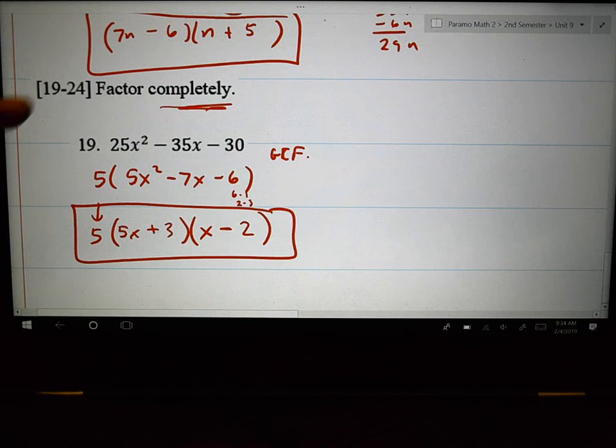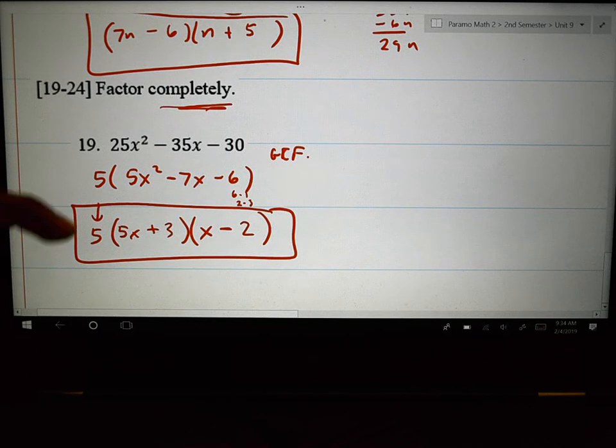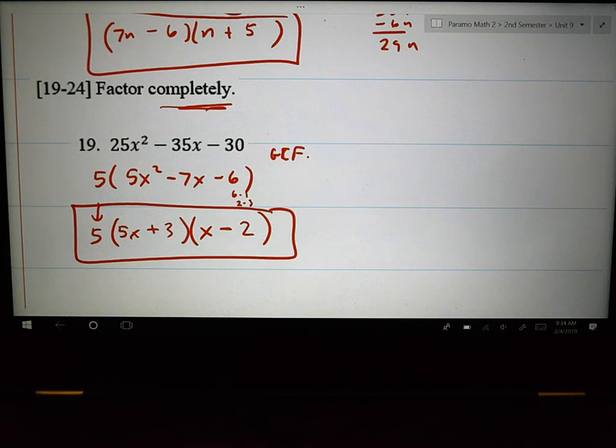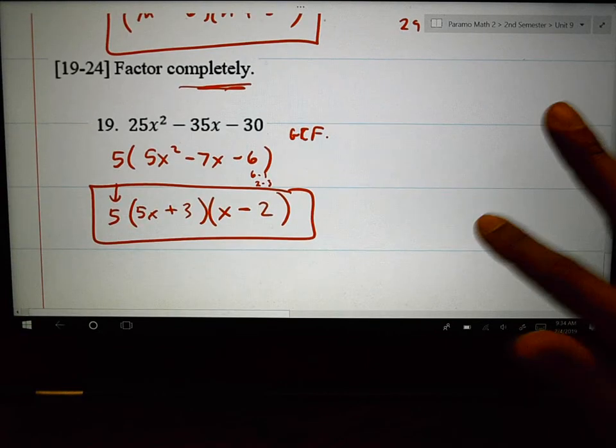When problems factor completely, do not forget the GCF stays in front. These are all your factors of number 19. We'll stop your notes right there.